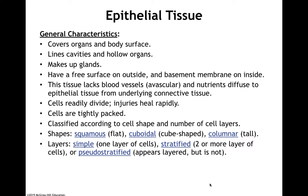We'll talk about bed sores at some point. Cells are tightly packed. They're classified according to two different things: their cell shape and the number of layers of cells that make up the membrane. The possible shapes are squamous, which are flat; cuboidal, which are roughly the same height as they are wide — not perfect cubes, but roughly the same width as height; and then columnar, which are taller than they are wide.